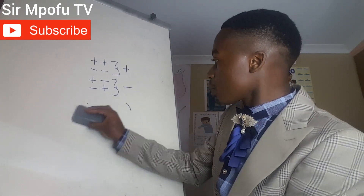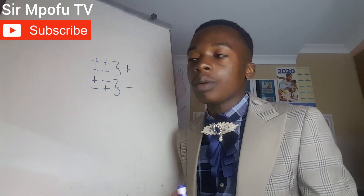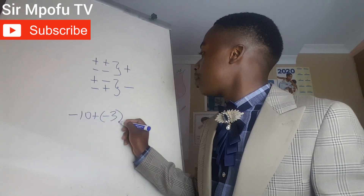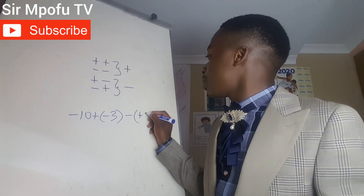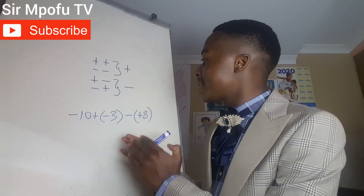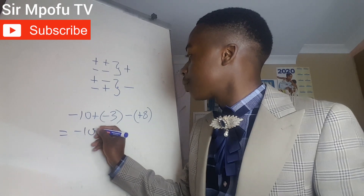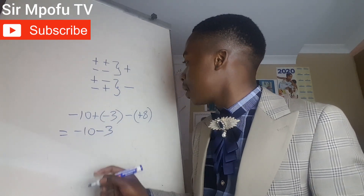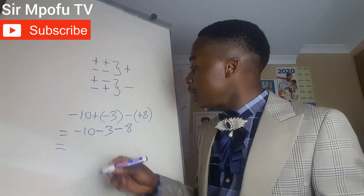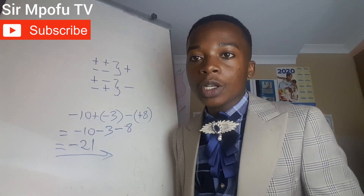Let's move on. Even when you are given three numbers, you still solve the same way. For instance, let's say you have minus 10 plus negative 3 minus positive 8. Solve the signs in the middle first, then solve as usual. This becomes minus 10, then plus and minus gives minus 3, then minus and plus gives minus 8. So our final answer is going to be minus 21.